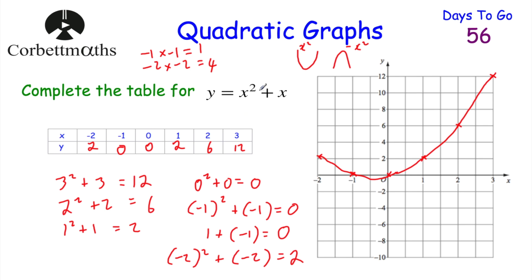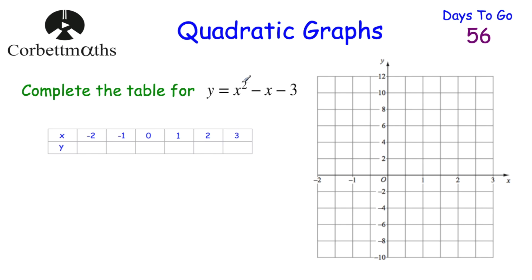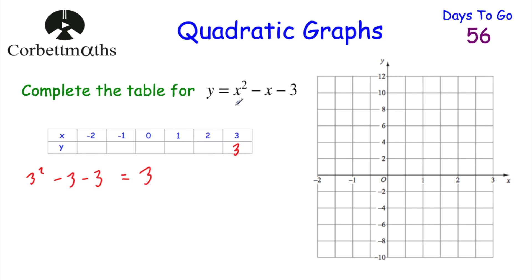Now let's look at another quadratic. We're going to draw the graph of y equals x squared minus x minus 3. We've got an xy table, so let's find our coordinates. When x equals 3, we substitute in: 3 squared minus 3 minus 3. That's 9 minus 3 is 6, minus 3 is 3. So when x equals 3, y equals 3.